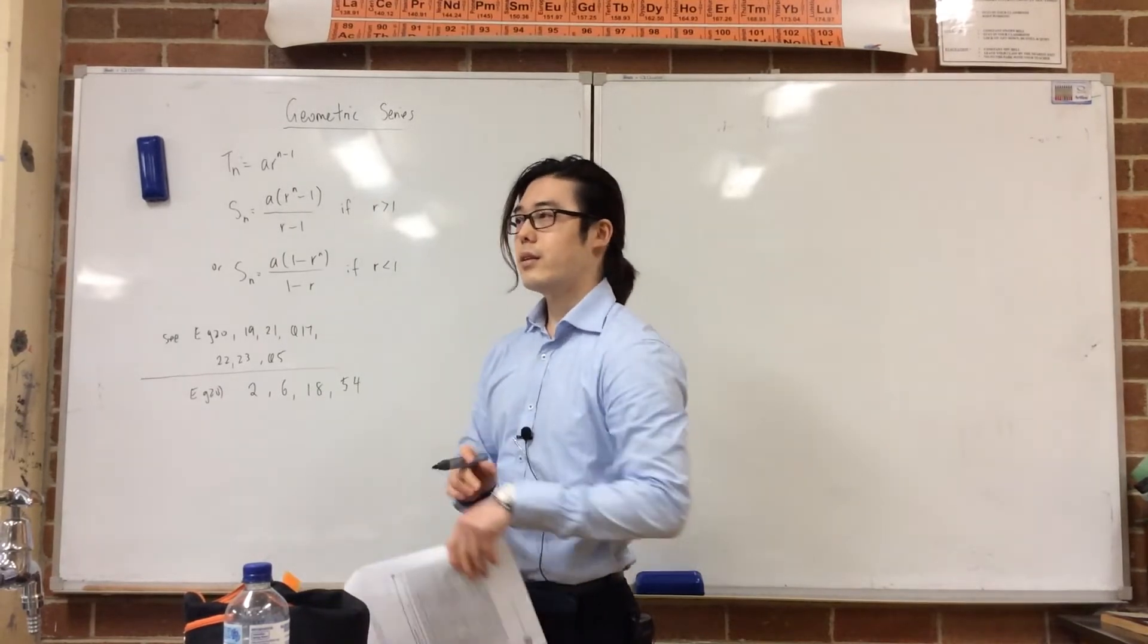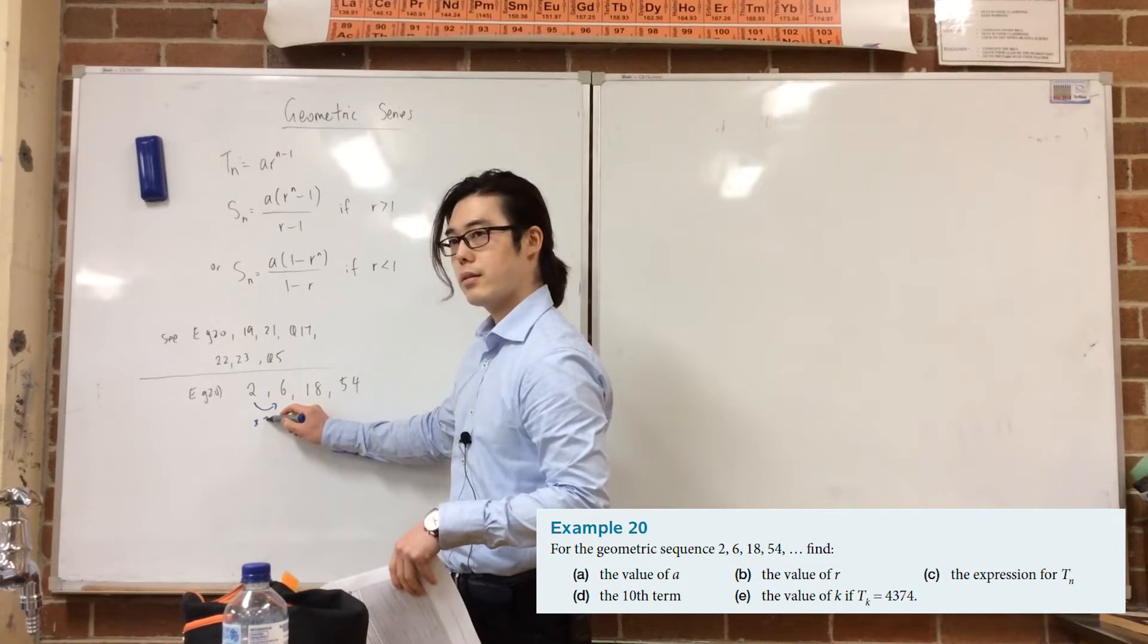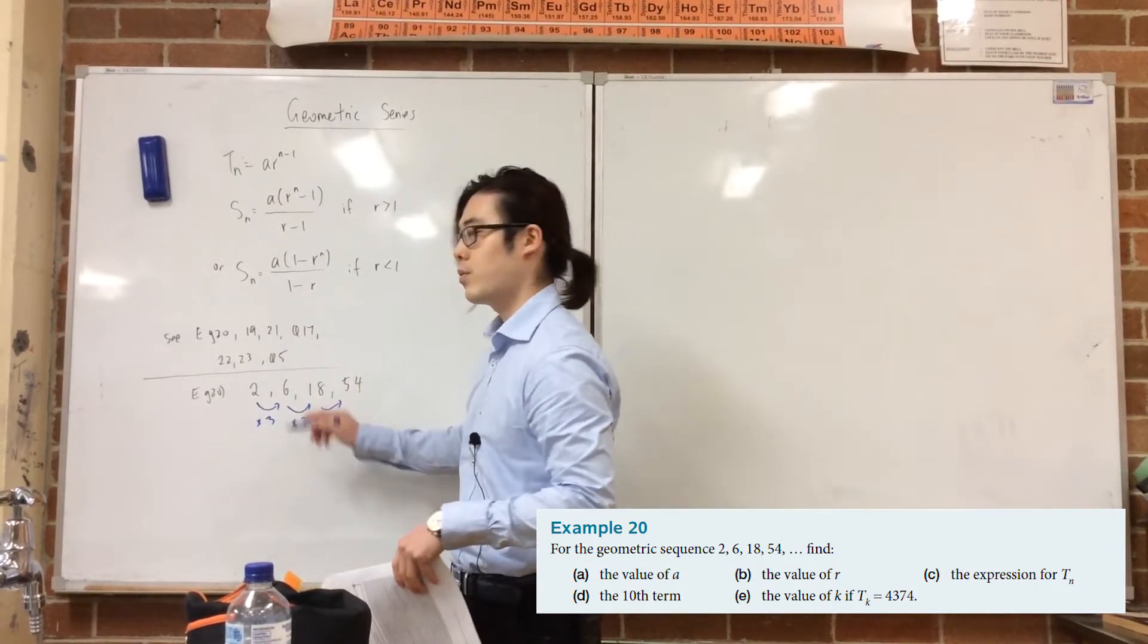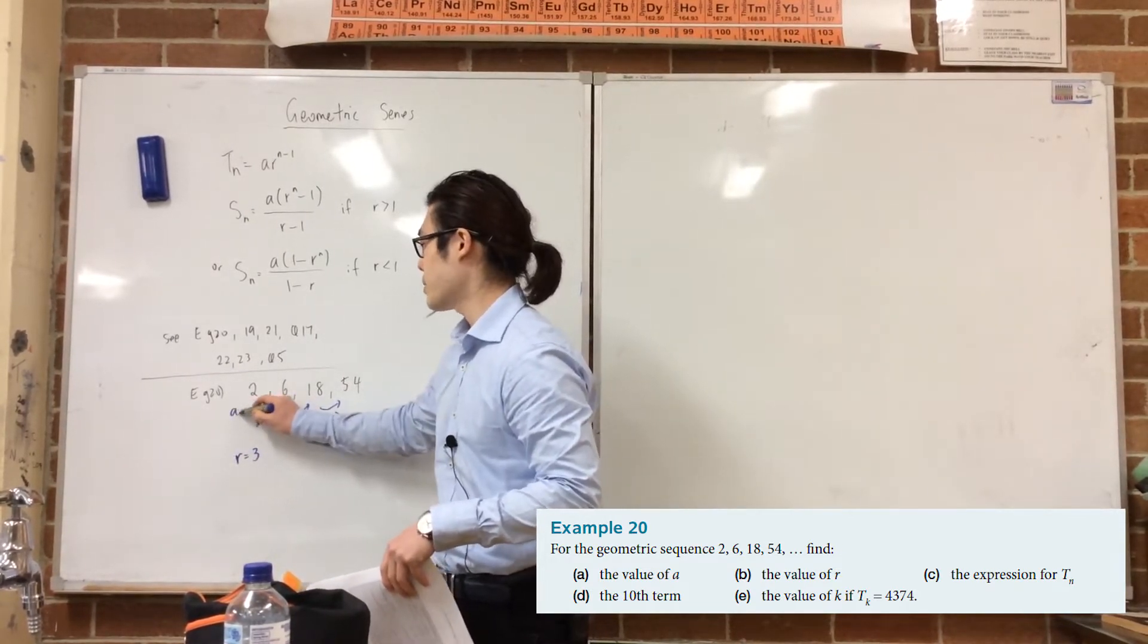Alright, geometric series, girls. I'd like to get started looking over here. It's basically when it's going up by a multiple of a number, instead of adding a number. So whatever the multiplier is, it's actually called r for ratio. The first term is still a.